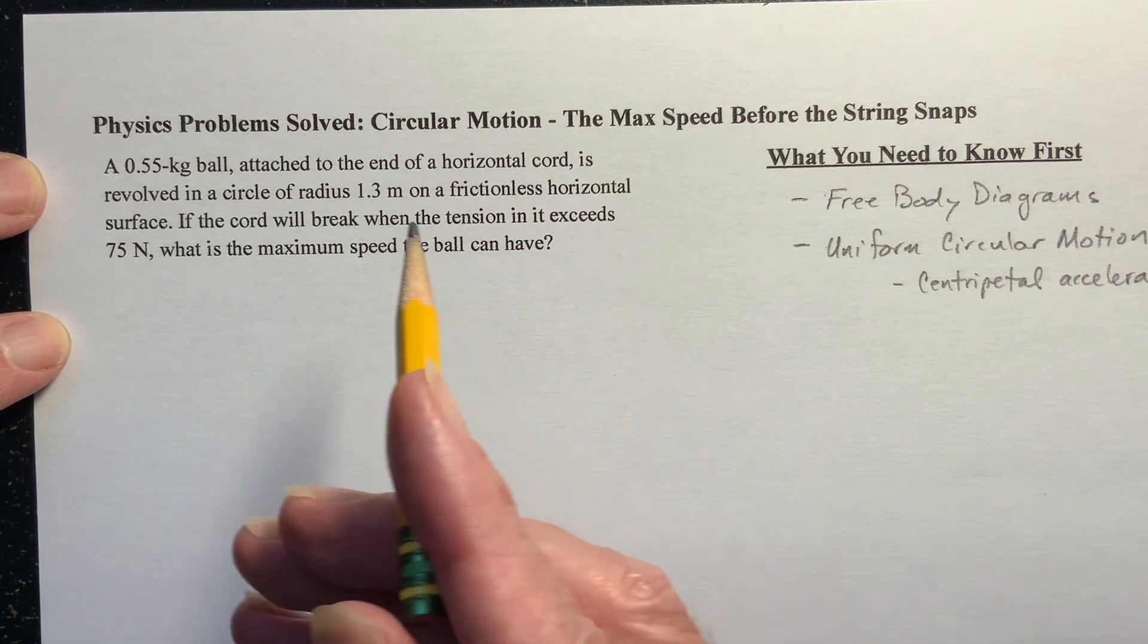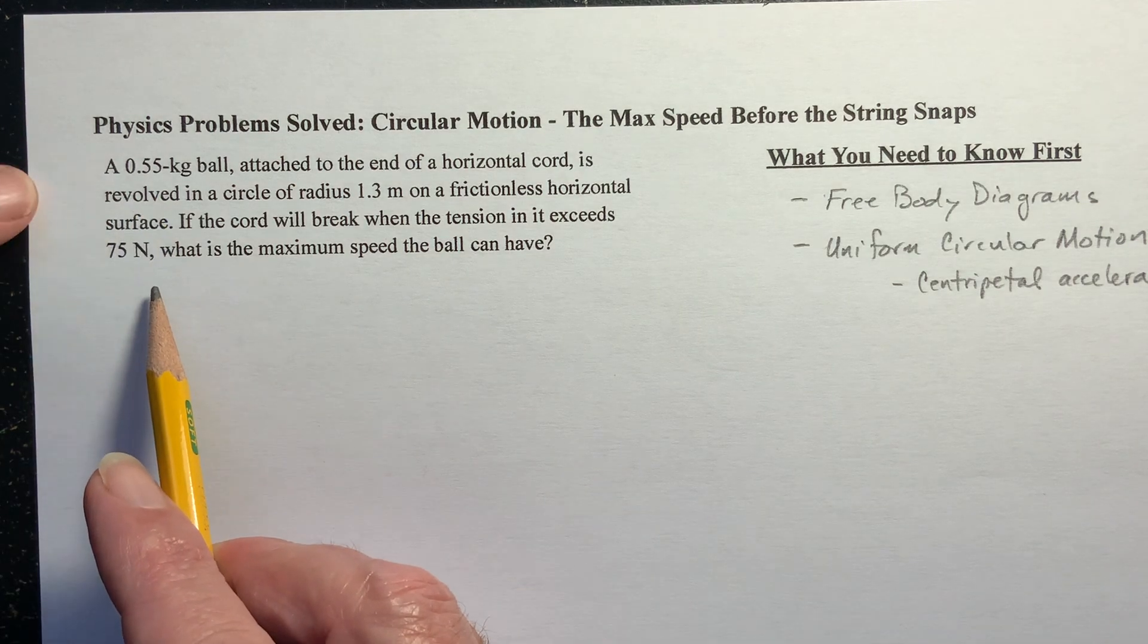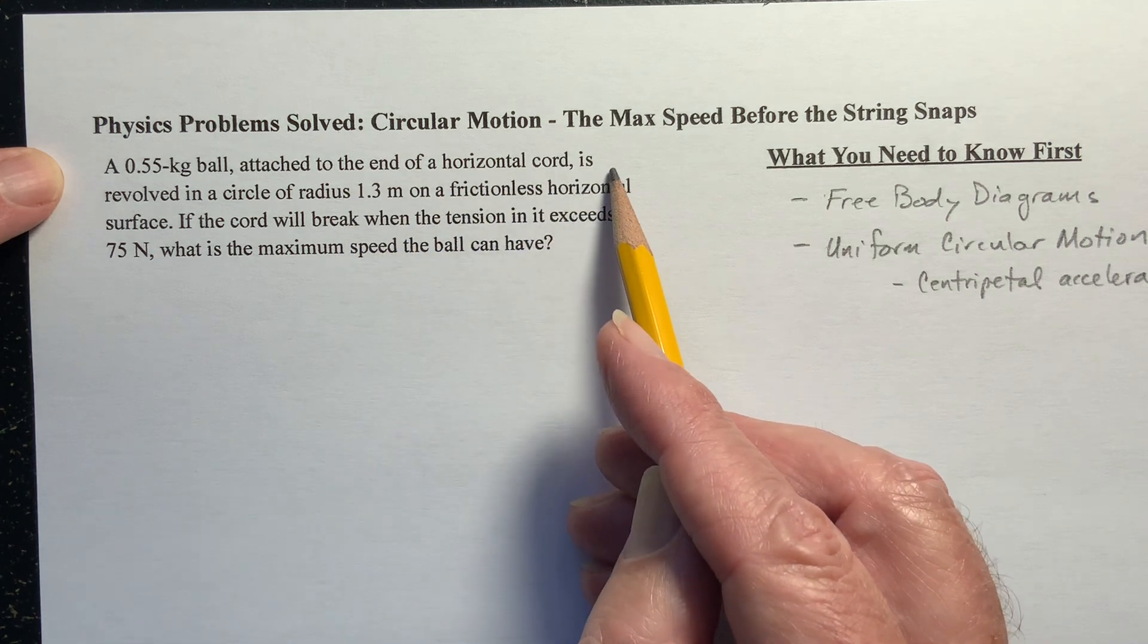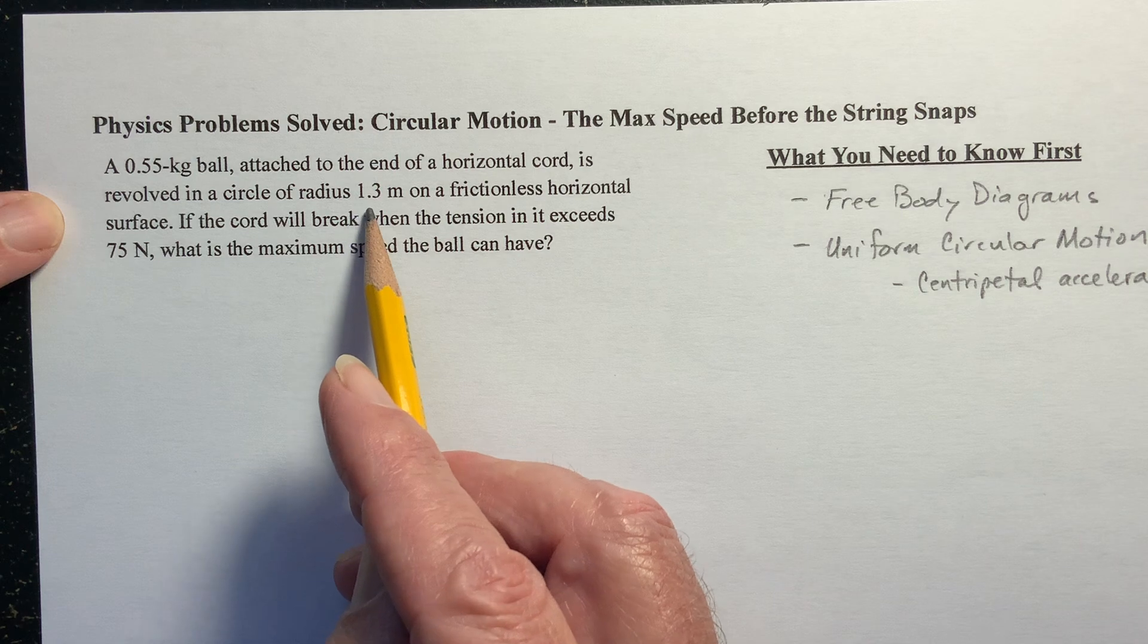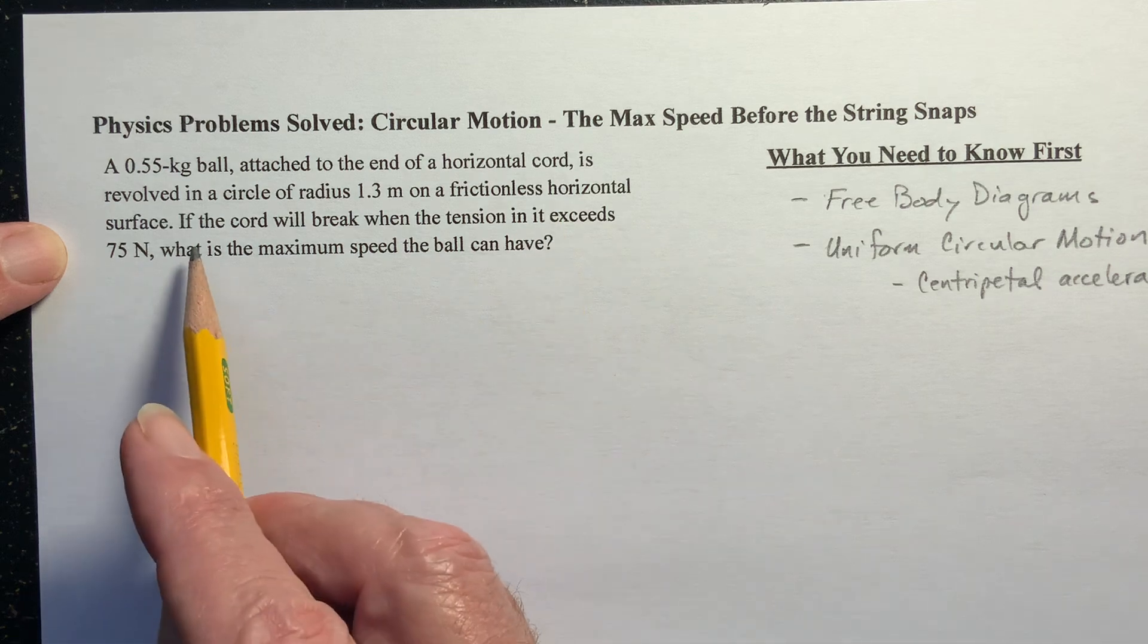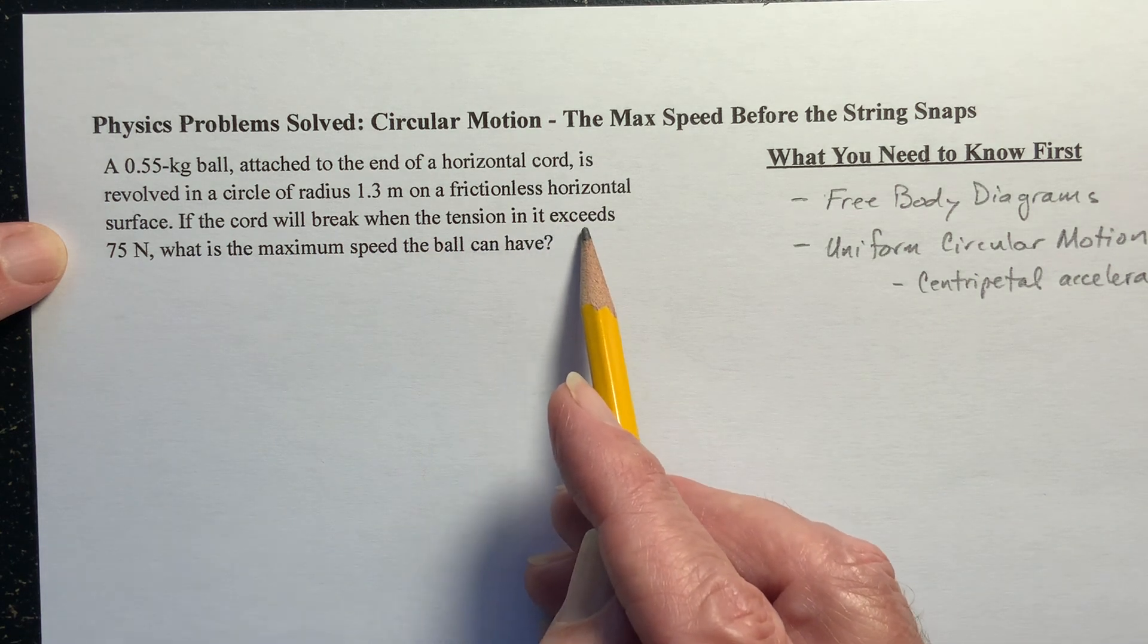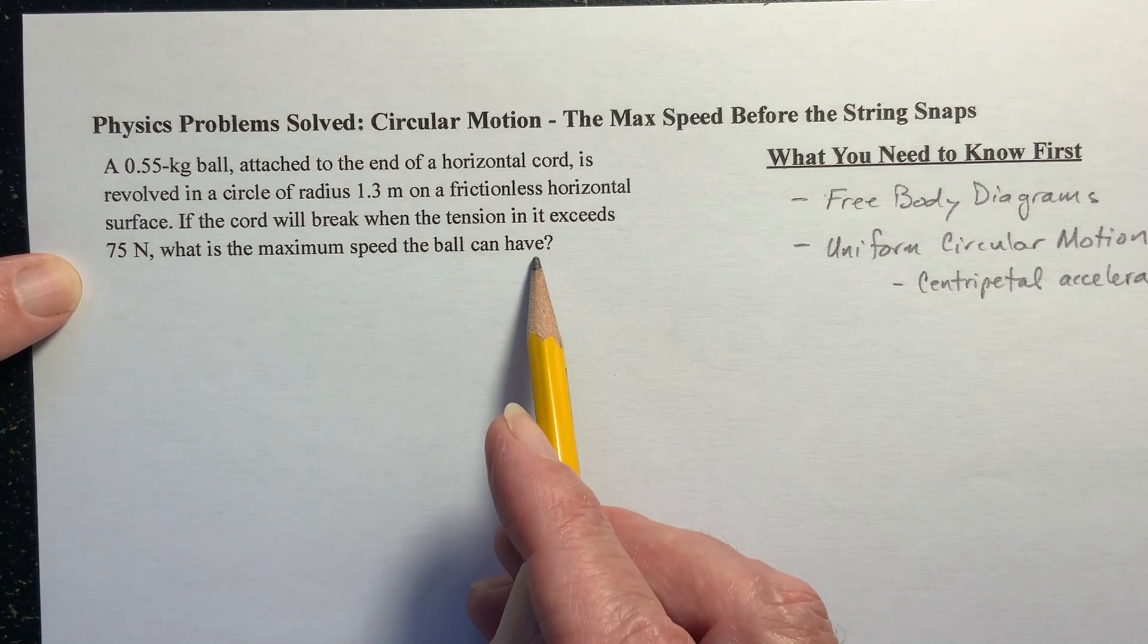Let's read the problem. We have a 0.55 kilogram ball attached to the end of a horizontal cord. It's revolved in a circle of radius 1.3 meters on a frictionless horizontal surface. If the cord will break when the tension in it exceeds 75 newtons, what is the maximum speed the ball can have?